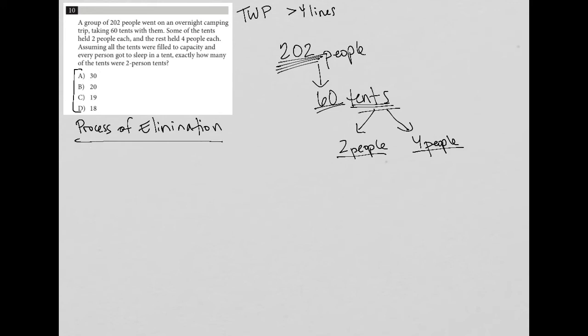So when I attempt or I try out answer choice A, I can say, well, if there were 30 two-person, so 2P, that would mean that there were also 30 four-person tents, because we're told here that there are 60 tents altogether. So that would mean that 60 people stayed in two-person tents, because 30 times 2 is 60. And that would mean 30 times 4, which is 120, was the number of people who stayed in four-person tents. But when I add those two numbers of people together, I get 180, and that's not equal to 202. So that's the problem with that.